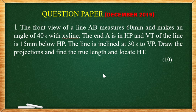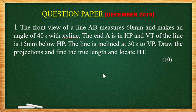So, true length and locate horizontal trace. Given data, the line AB measures 60 mm, the front view of a line AB measures 60 mm.